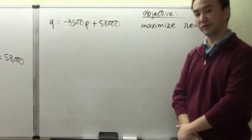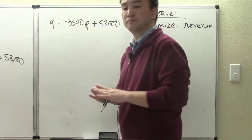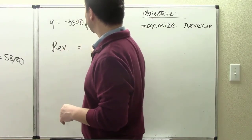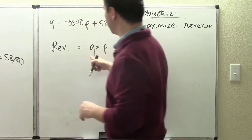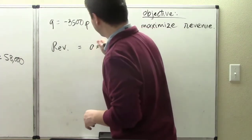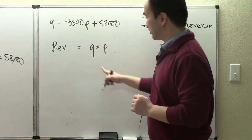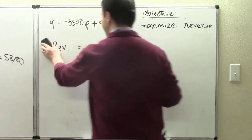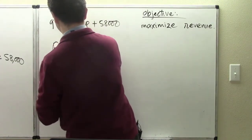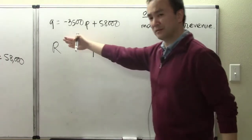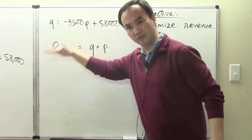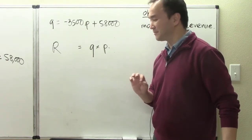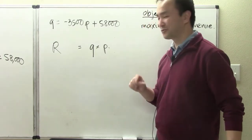Business major students are well aware that revenue equals quantity times price — R = Q × P. We have found that Q is the expression −3,500P + 58,000. So now, revenue as a function — our objective function for this particular problem — is formed by substituting that expression.